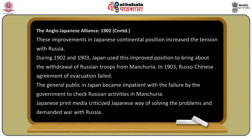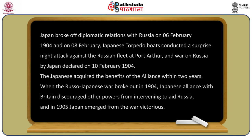These improvements in Japanese continental position increased tension with Russia during 1902 and 1903. Japan used its improved position to bring about the withdrawal of Russian troops from Manchuria. In 1903, the Russia-China agreement on evacuation failed, and the general public in Japan became impatient with the government's approach to checking Russian activities in Manchuria. Japanese print media criticized the government's way of solving problems and demanded war with Russia.